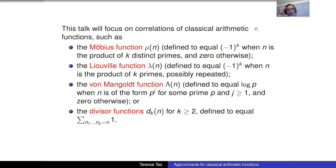We're going to talk about the most classical arithmetic functions — basically the ones connected to the Riemann zeta function. The arithmetic functions we care about are: the Möbius function, which equals (-1)^k when n is squarefree and a product of k primes; the Liouville function, defined the same way but without the squarefree restriction; the von Mangoldt function, which counts primes — defined to be log p when n is a prime p or a power of a prime, and zero otherwise; and the divisor functions d_k, which count the number of ways to write n as a product of k factors.